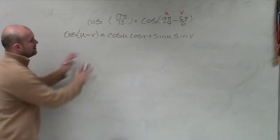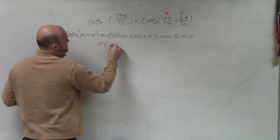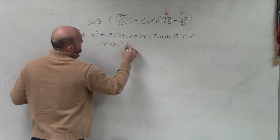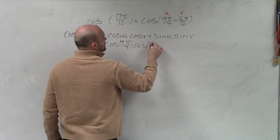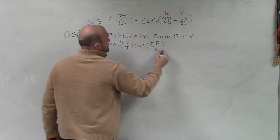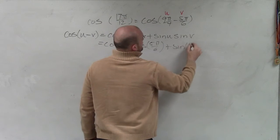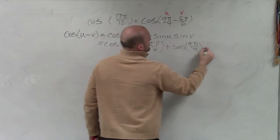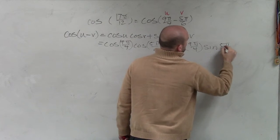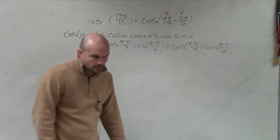We know that our u is 9π over 4, so it's going to be cosine of 9π over 4 times the cosine of positive 5π over 6 plus the sine of 9π over 4 times the sine of 5π over 6, right?